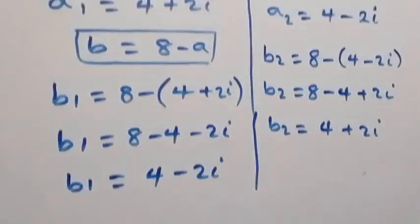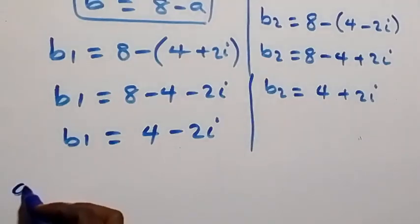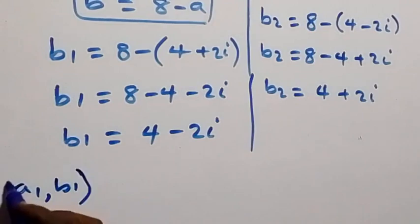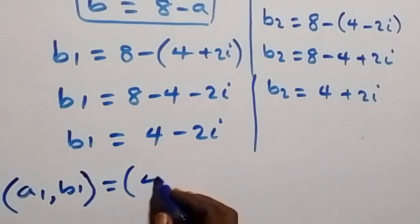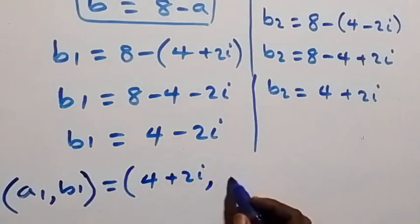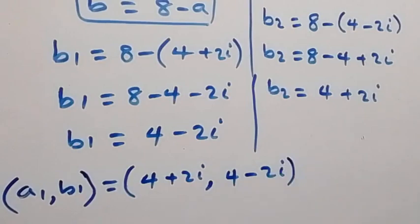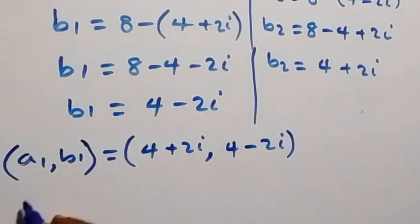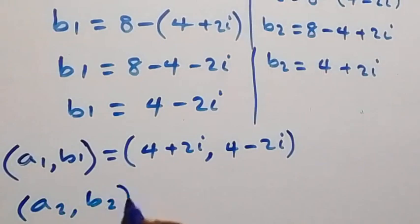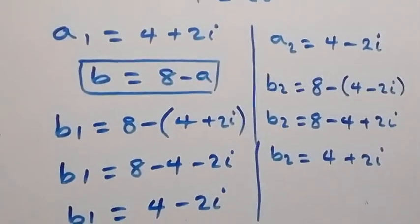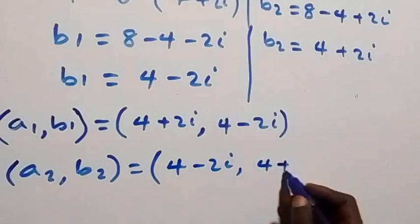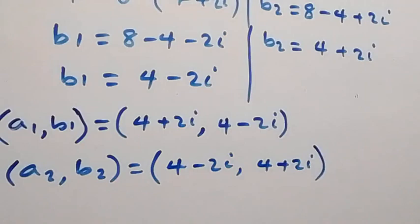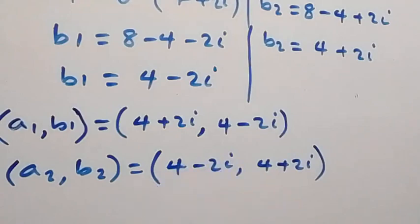We can now write out the solution sets. The first set of solutions (a1, b1) is (4 plus 2i, 4 minus 2i). The second set of solutions (a2, b2) is (4 minus 2i, 4 plus 2i). Notice that the value of a in the first solution is the value of b in the second solution, and vice versa.